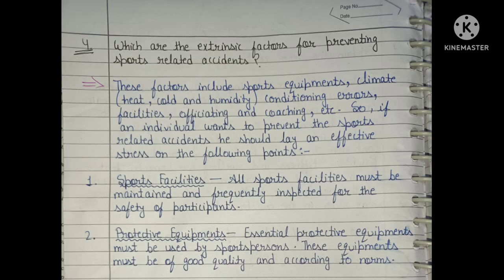Question four: what are the extrinsic factors for preventing sports-related accidents? These factors include sports equipment, climate, heat, cold and humidity, conditioning errors, facilities, officiating and coaching, etc. To prevent sports-related accidents, effective stress should be laid on the following: sports facilities — all sports facilities must be maintained and frequently inspected for the safety of participants; and protective equipment — essential protective equipment must be used by sports persons and must be of good quality and according to norms.